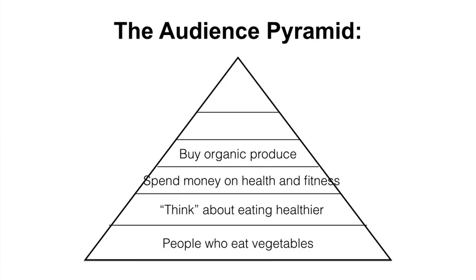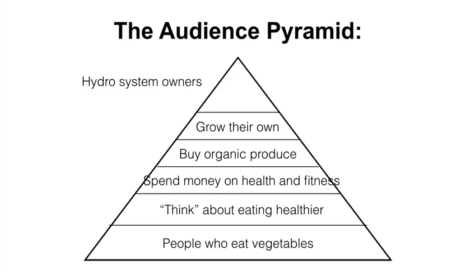This is a huge delineation point in our pyramid because we've gone from an audience aware of health and fitness but not taking action, to one that now spends real money on health-related products. Above this group, we have people who shop for organic produce — anyone who shops at Whole Foods or is willing to pay extra for pesticide-free organic food. Above them are people who actually grow their own organic food in a garden or shop at farmer's markets, willing to dedicate time and effort to acquiring it. And at the very top are people who have already purchased a competing home grow product — some kind of hydroponic system.